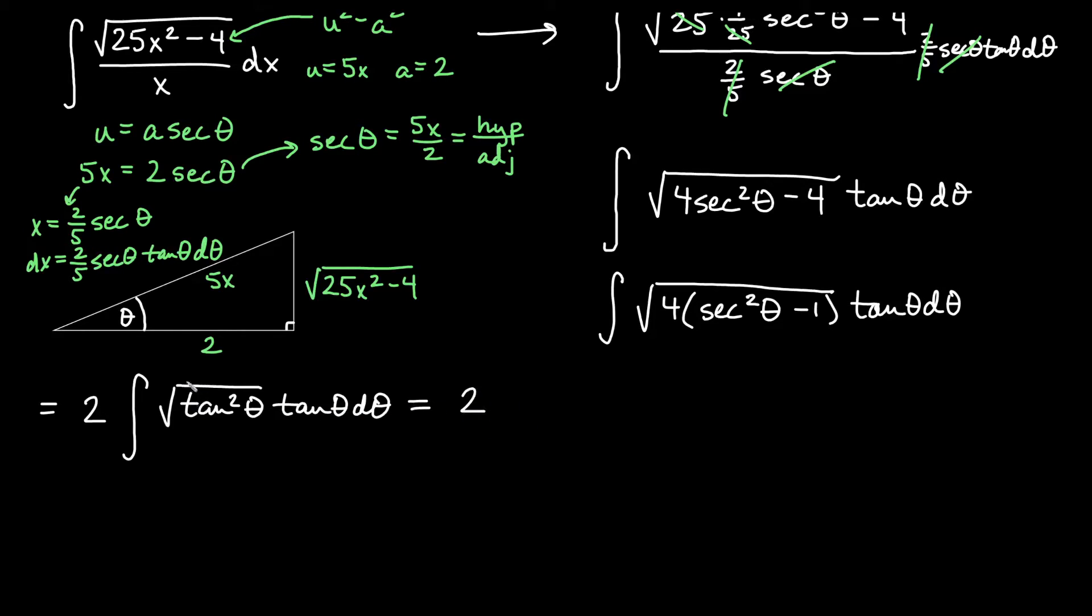And then if I keep the 2, the square root of tangent squared since we're in quadrant 1 with all these angles is just going to be tangent. So I get another tangent from this and I get a tangent there. So if I combine those, that's going to be tangent squared theta d theta.